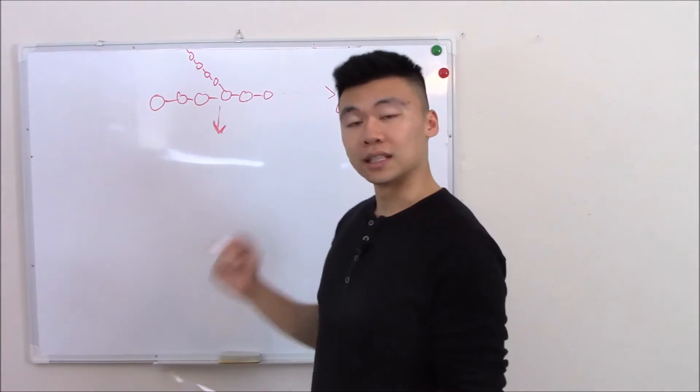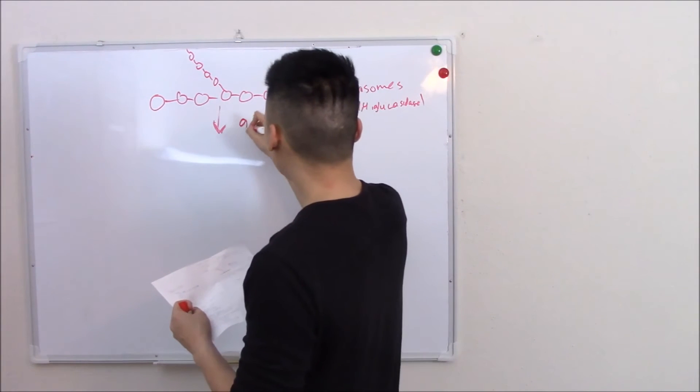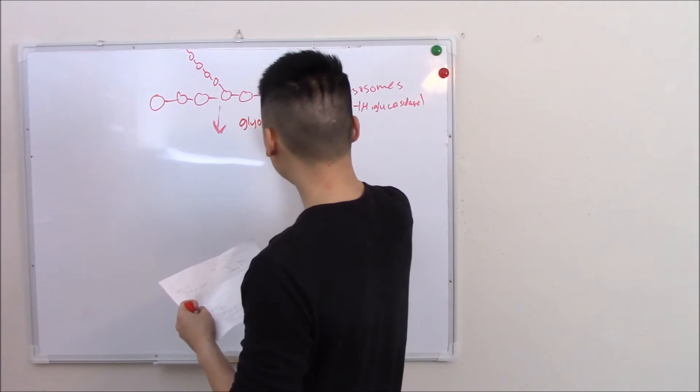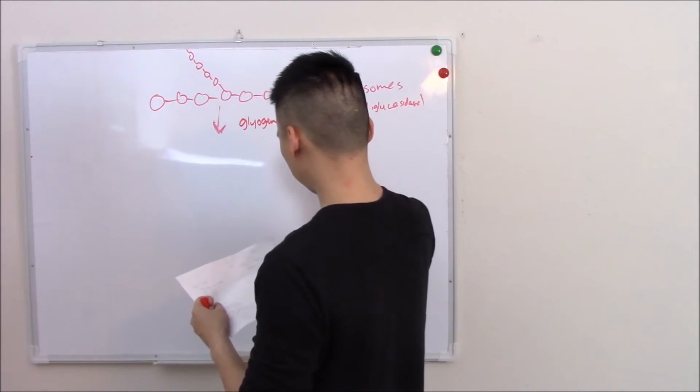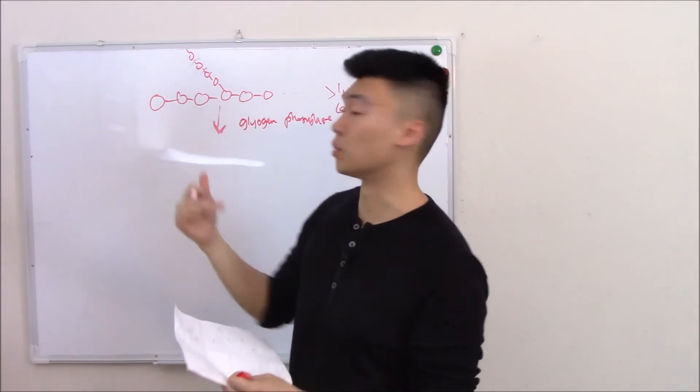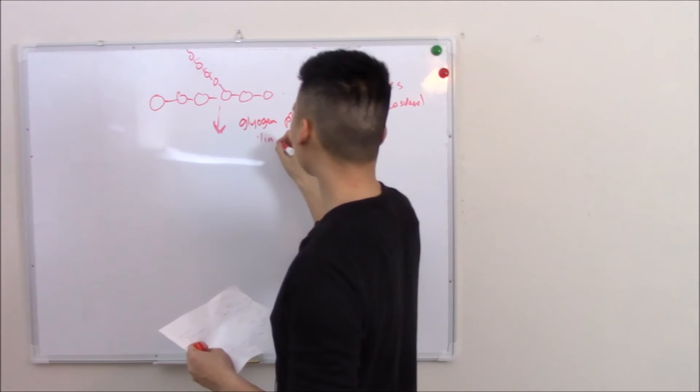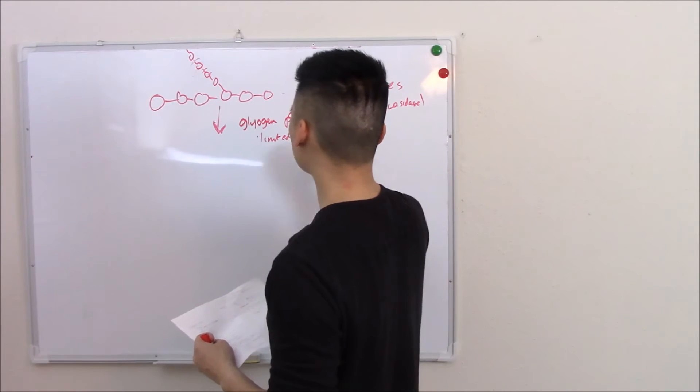We go through a system of enzymes that starts chopping away at it. The first one is glycogen phosphorylase, and what that does is it chops off these until only a few remain. And the few that remain we call limited dextrins.